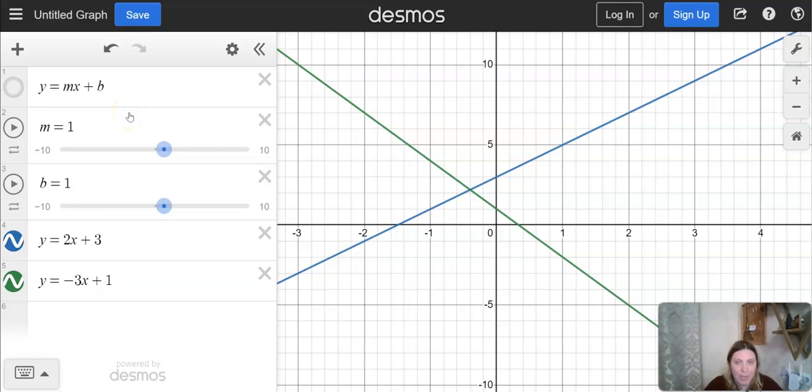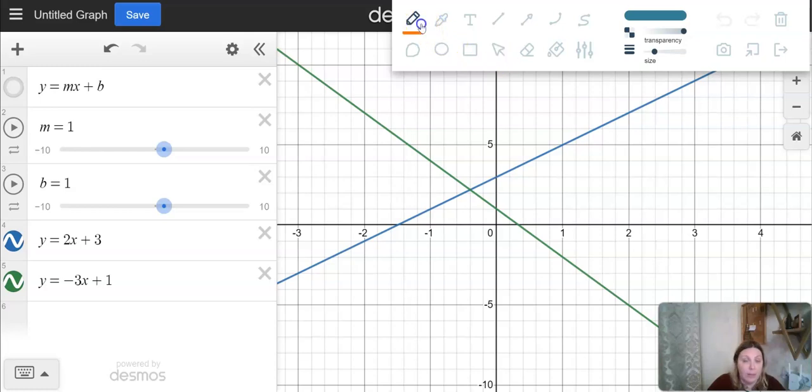Hello everyone. So today we're talking about linear functions and the slope intercept form for the linear function. So what does it look like?